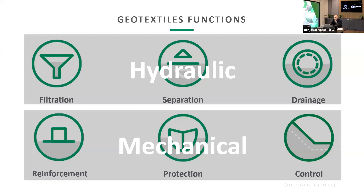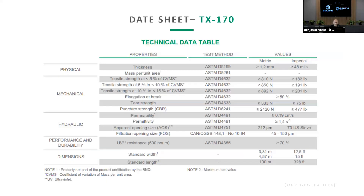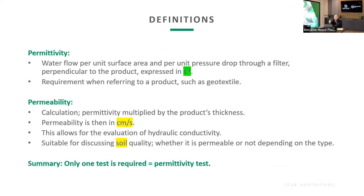With geotextiles we have two big families of properties relevant to any project: the hydraulic portion, which covers filtration, separation, and drainage; and the mechanical portion, which covers reinforcement and protection. Depending on your application, you determine whether it's more hydraulic or more mechanical. All our geotextiles come with a data sheet listing mechanical properties, hydraulic properties, and roll dimensions. Permittivity is defined as the measure of water flow per unit surface area per unit pressure drop through a filter.